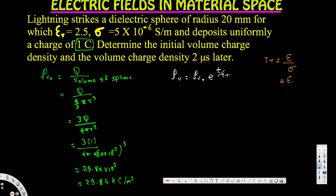The relaxation time t_r can be calculated using epsilon divided by sigma. Epsilon equals epsilon_r times epsilon_0 divided by sigma. We have epsilon_r equal to 2.5, epsilon_0 equal to 10 to the power of minus 9 divided by 36 pi, and sigma equal to 5 times 10 to the power of minus 6. Calculating this gives a t_r value of 4.421 microseconds.